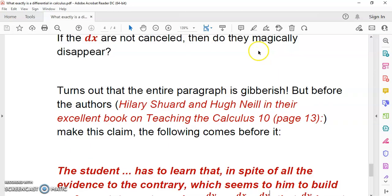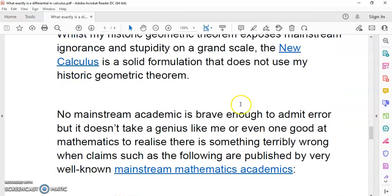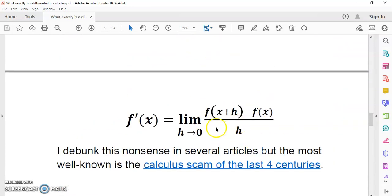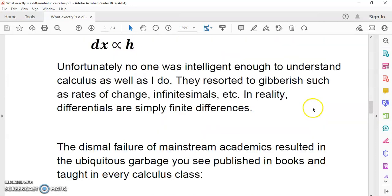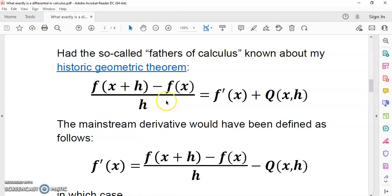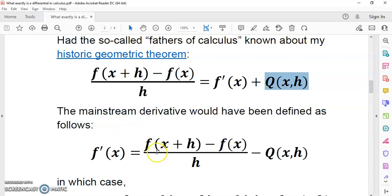Because what they're actually saying, with their mainstream definition, is that the limit of a constant, of any constant, is zero. So what they do is they take the limit of this, and then they leave the slope constant, but they decide that this portion here, which can only be zero in the case of a straight line, disappears. It magically disappears using the theory of limits.